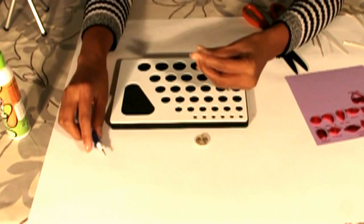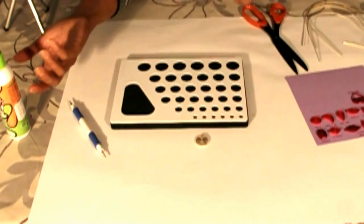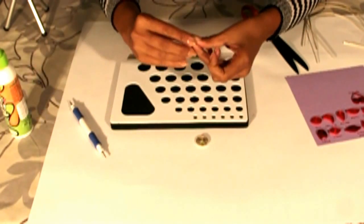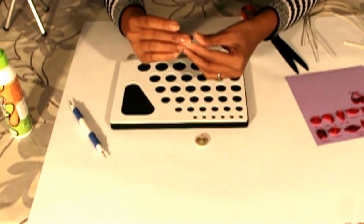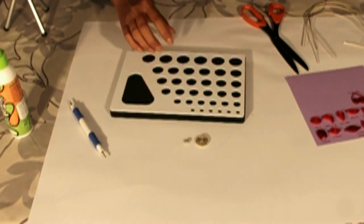So remove it from the quilling pen again and put some glue at the end again. So now you have your tight coil.